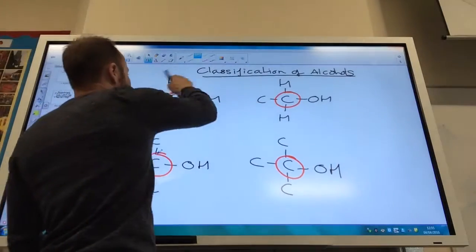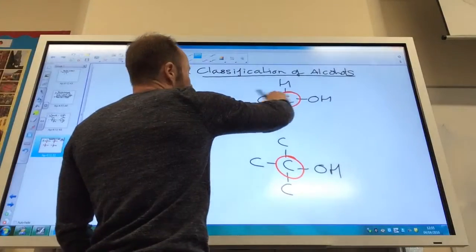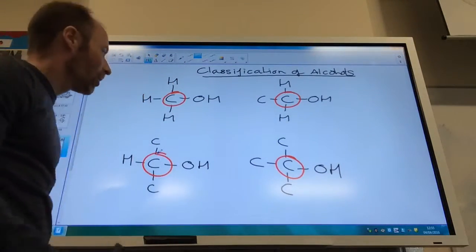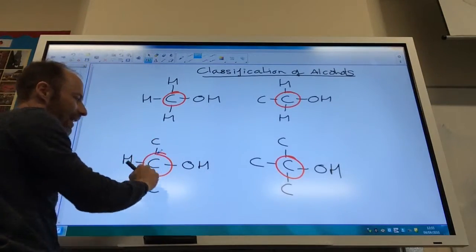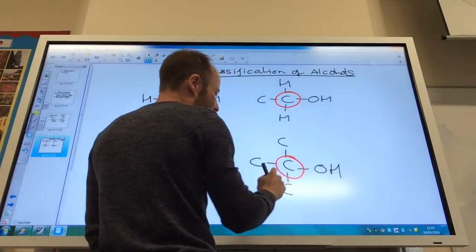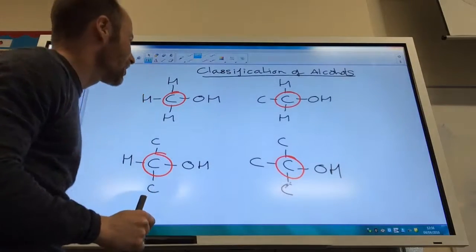If you've got none or you've got one carbon attached it's a primary alcohol. If you've got two carbons attached it's a secondary alcohol and if you have three carbons attached it's tertiary.